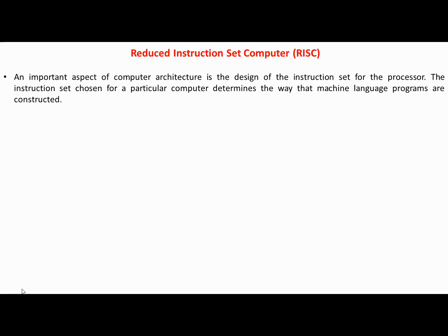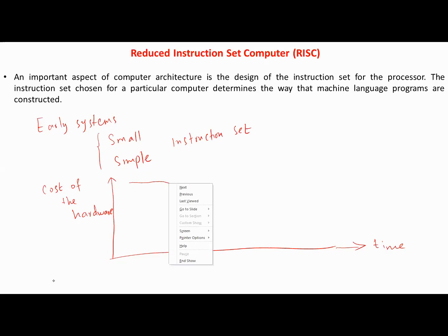An important aspect of computer architecture is the design of the instruction set for the processor. The instruction set chosen for a particular computer determines the way that machine language programs are constructed. Early systems had a small and simple instruction set because of the cost of the hardware. In the early systems the cost of hardware was very high, but it has decreased with the advent of integrated circuits.